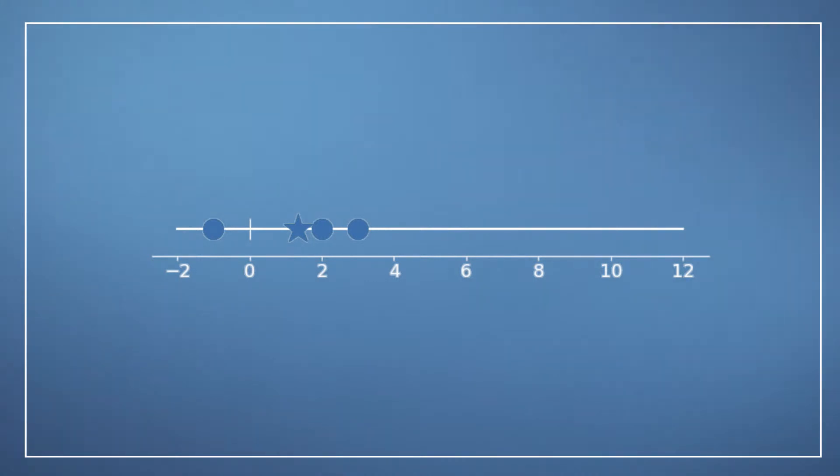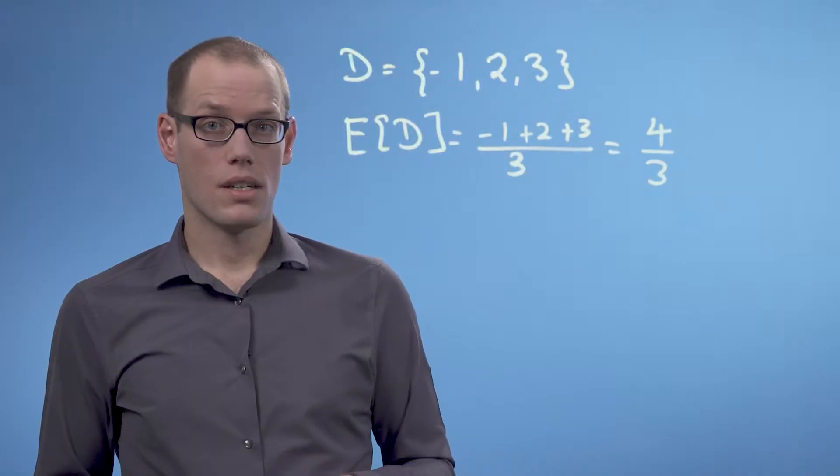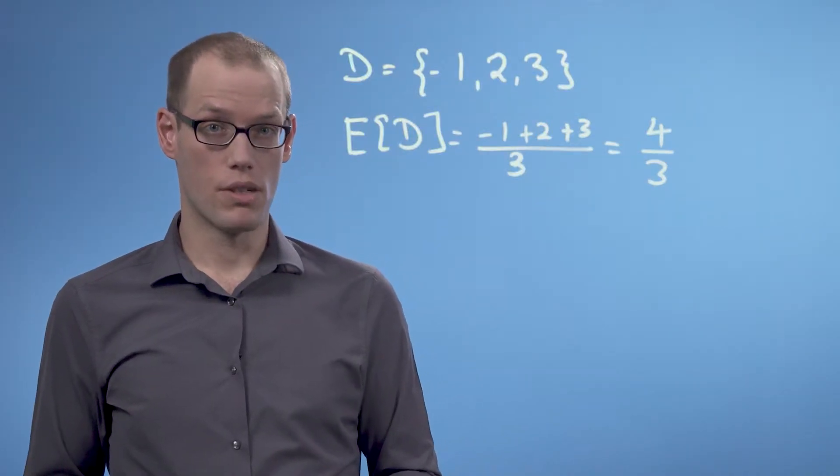Now the question is what happens to this data set when we shift it? Let's have a look at a shift by 2 to the right. We end up with these red dots now. What happens to the mean value of this data set if we shift the original data set to the right? Well, the answer is the mean also shifts by 2.